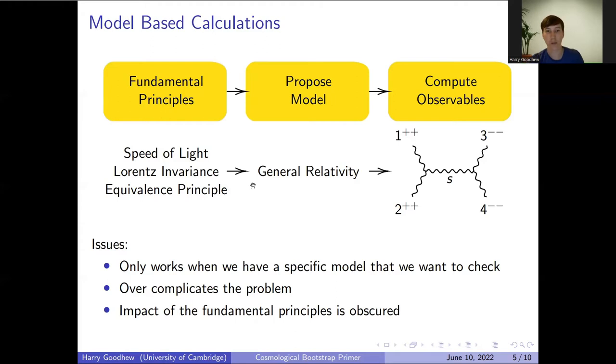Once we have general relativity we can write down some Lagrangian and then quantize the fields that are present and then calculate objects like, for example, this two-to-two scattering of gravitons. This works very well when we have a specific model we want to test. For example, in the standard model we can take what symmetries we expect to find and come up with a general theory, and then we can test it to incredibly high accuracy, and that accuracy is born out through experiments.